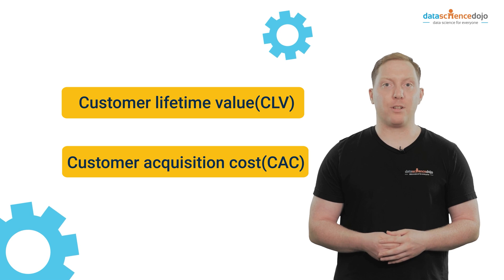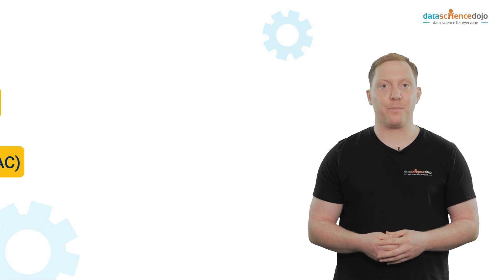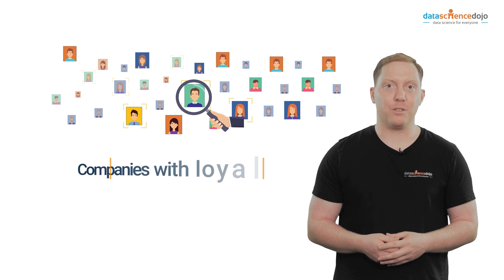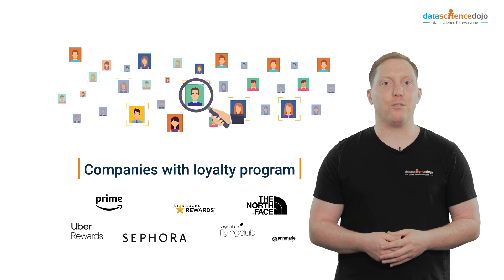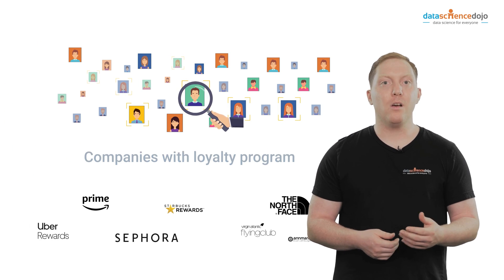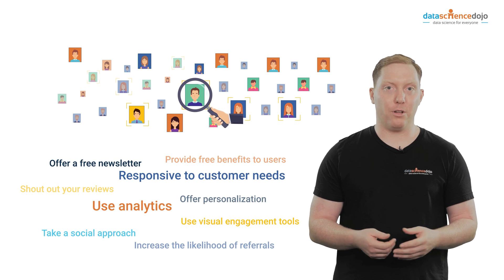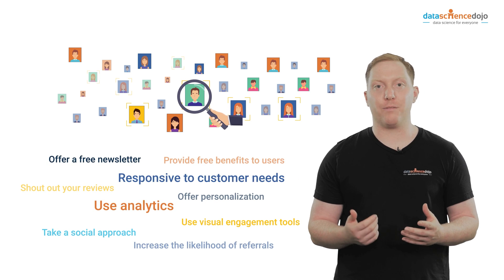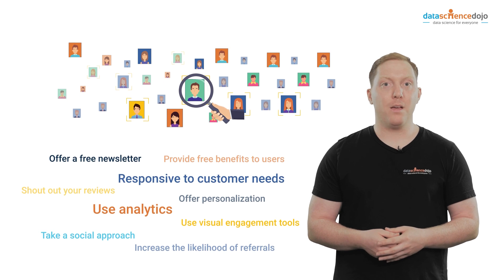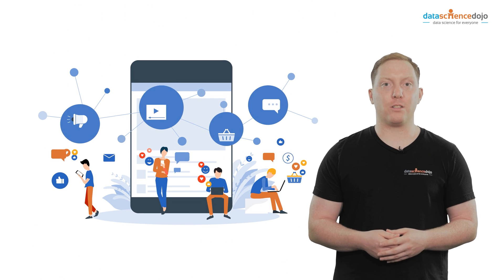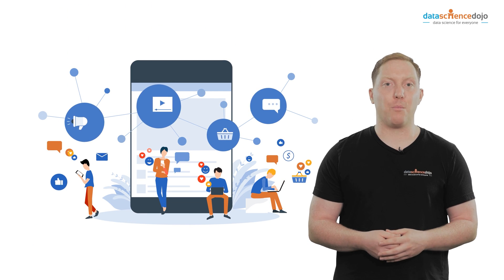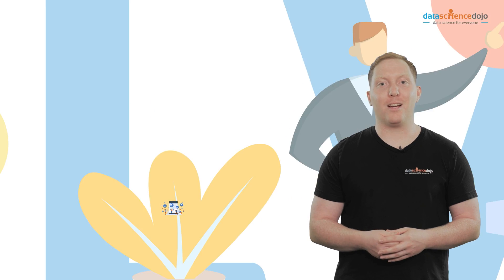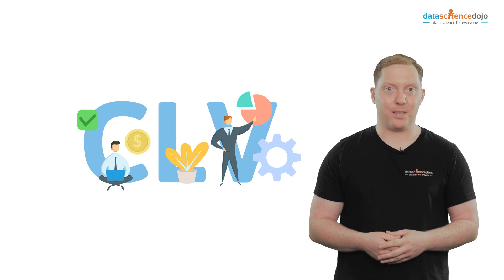CLV and CAC are metrics that can boost your business's revenue stream. Here's how: 1. Identify high revenue generating customers. Optimize profits and design loyalty programs to retain them. 2. Focus on improving engagement with low revenue generating customers to identify and serve their needs better. 3. Make informed decisions that are focused on monetizing your marketing efforts. 4. Form a healthy customer base using the CLV metric.